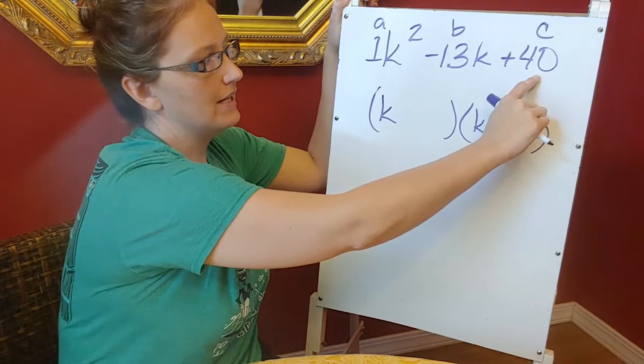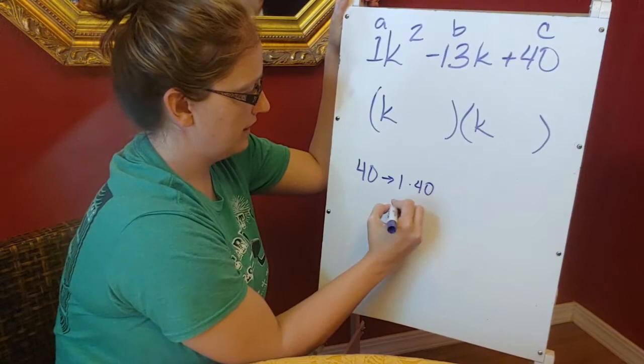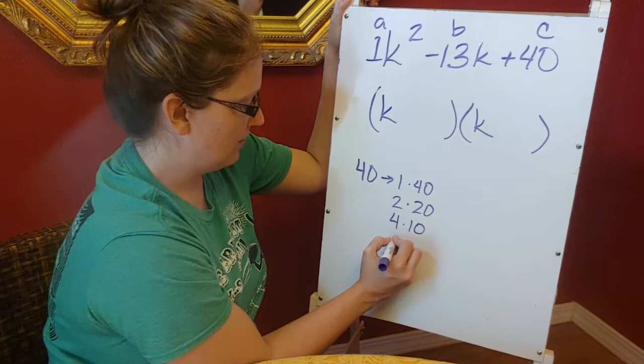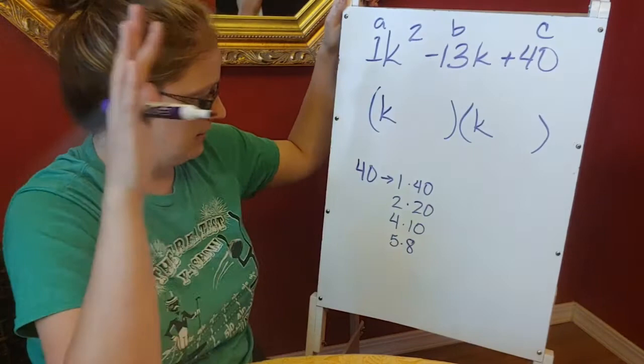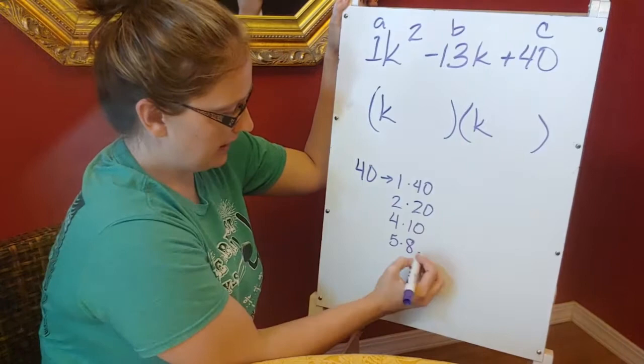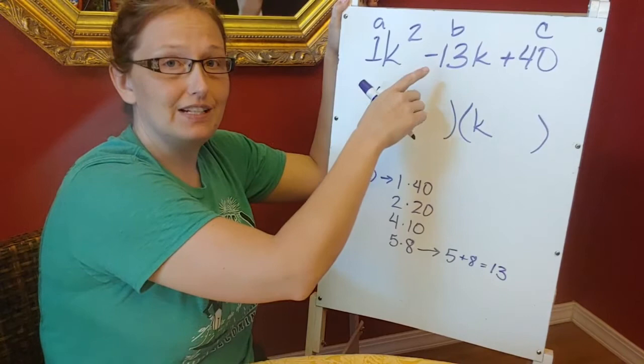So I'm going to come down here and list some factors of 40. I have 1 times 40, 2 times 20, 4 times 10, what about 5 times 8? Yeah, and then we're good. So I'm going to look at those, and are there any of those that whenever I add them together give me a -13? Well, if I look through here, 5 times 8, if I were to add 5 + 8, I do get 13, but I need a -13, right?